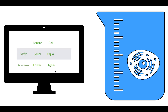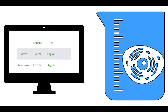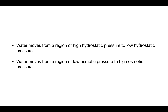If we reverse it — low osmotic pressure outside the cell and high osmotic pressure inside the cell — the cell would expand with fluid, because water moves from an area of low solute concentration to an area of high solute concentration. The two main rules to remember: water moves from a region of high hydrostatic pressure to an area of low hydrostatic pressure, and water moves from a region of low osmotic pressure to a region of high osmotic pressure.